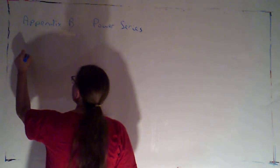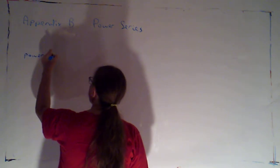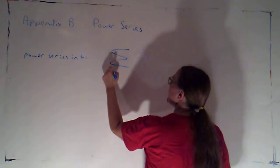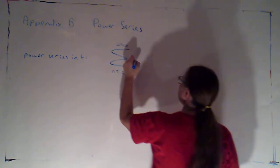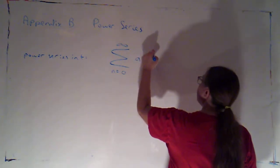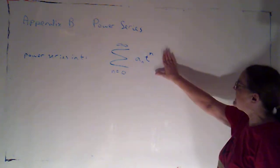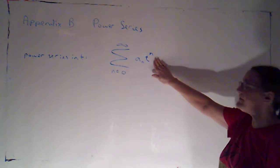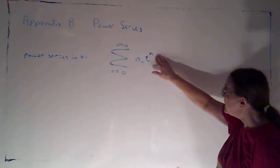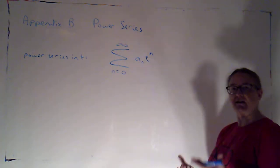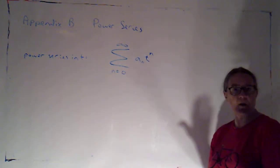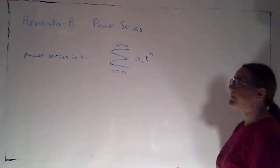A power series in T is an infinite sum: the sum as n goes from zero to infinity of a sub n times T to the n. So it's an infinite sum of multiples of non-negative powers of T. When n is zero, T to the zero is just one, giving a constant term. Then we have T's, T-squareds, T-cubeds, and we just keep going.